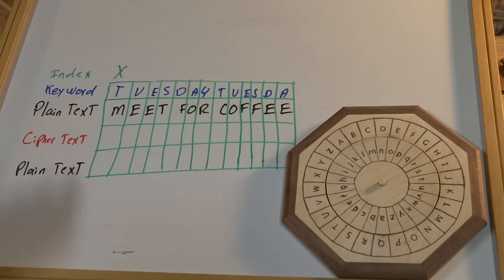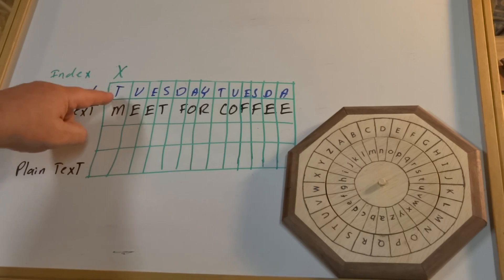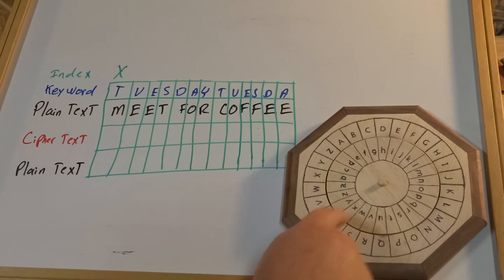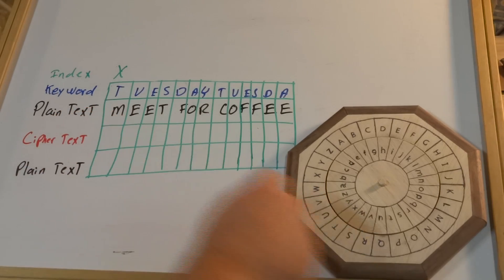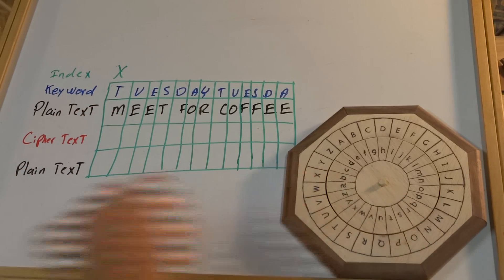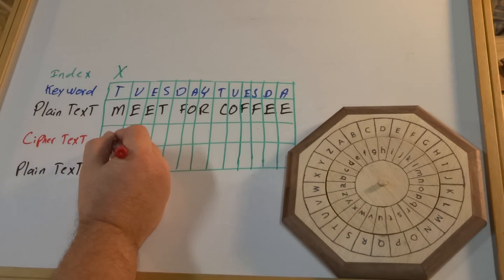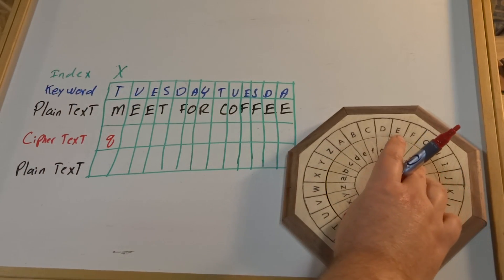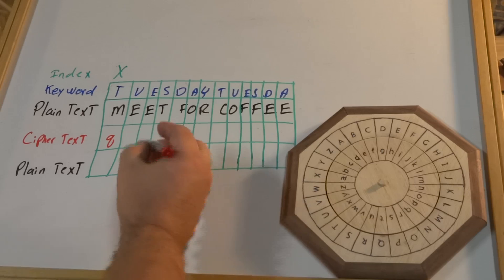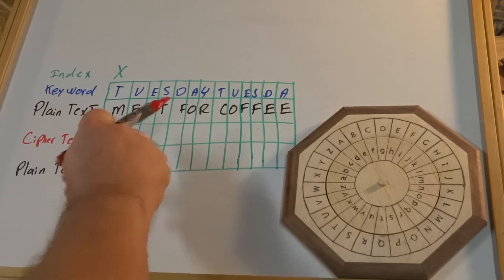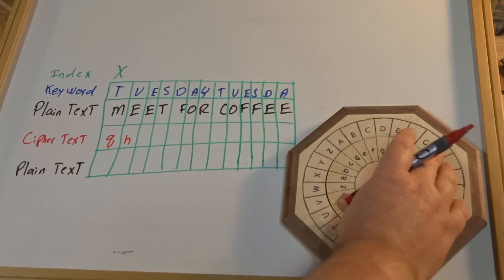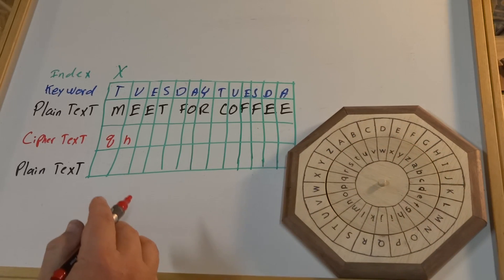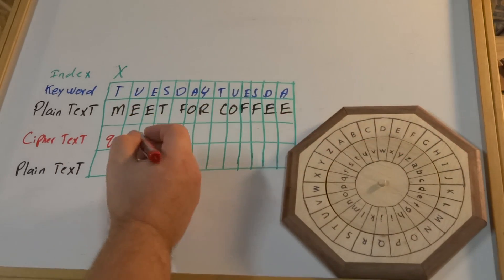What this lets us do is we're going to set the code wheel for every letter. So first we take our index X and align it to T of our keyword. So T and X are aligned. I look for M and encode it — M happens to equal Q. Then we change our wheel so X and U are aligned, we look for the E and encode it, and that's H. Now we set X and E together, and we look for E and encode it — that obviously happens to be X.